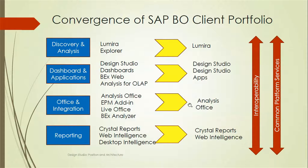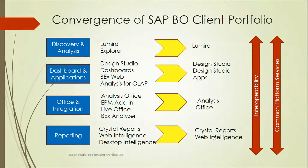For reporting, there are three tools: Crystal Reports, Web Intelligence, and Desktop Intelligence. Going forward, only Crystal Reports and Web Intelligence will be used - Desktop Intelligence will be retired. SAP's plan is that Lumira, Design Studio with Apps, Analysis Office, Crystal Reports, and Web Intelligence will have interoperability across platforms and can be deployed on a common BI platform.